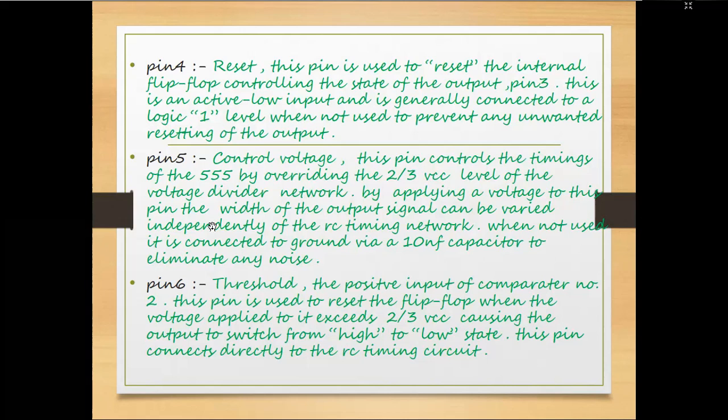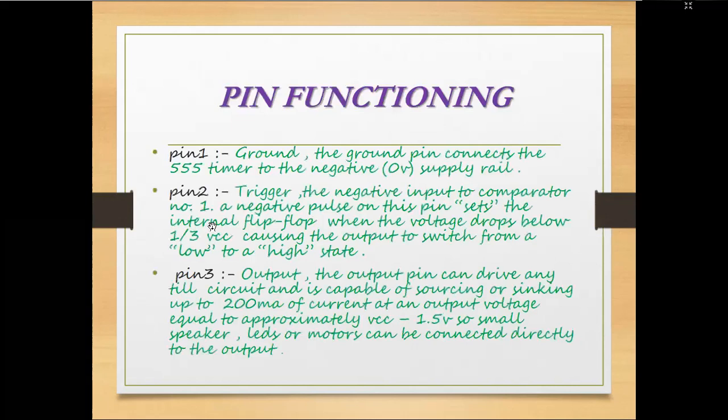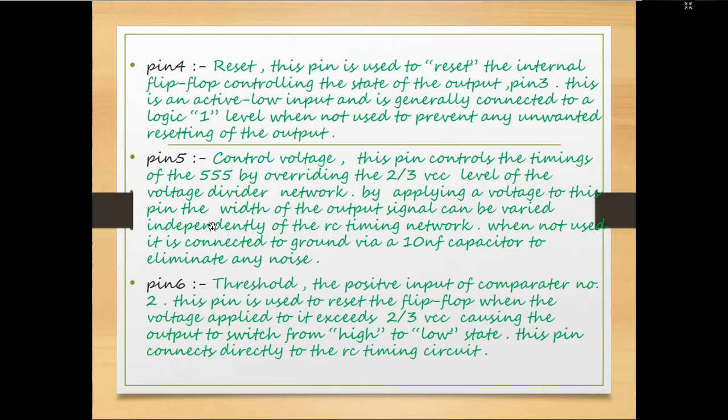Pin 5 is the control voltage pin. This pin controls the timing of the 555 by overriding the 2/3 Vcc level set by the internal voltage divider network. By applying a voltage to this pin, the width of the output signal can be varied independently of the RC timing network.